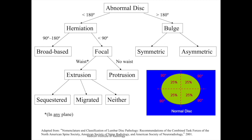If the waist of the sac is smaller than the main sac dimension, it is called extrusion. If there is no waist and the base is much broader, it is called protrusion. An extruded disc can migrate, get sequestered, or remain as it is. That summarizes the different types of abnormal disc and the ways they can herniate into different areas.